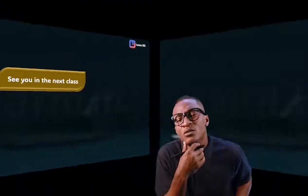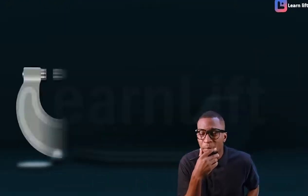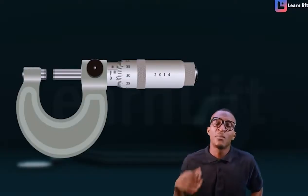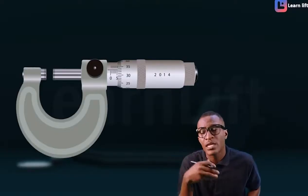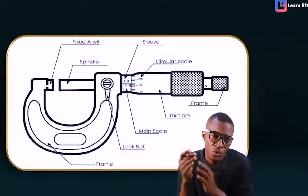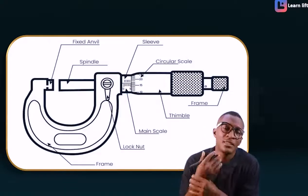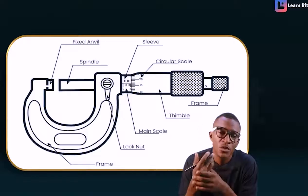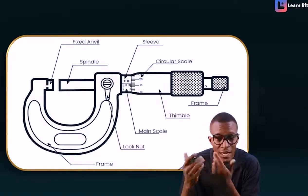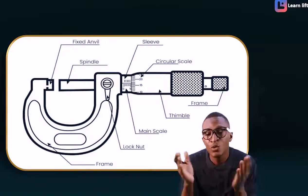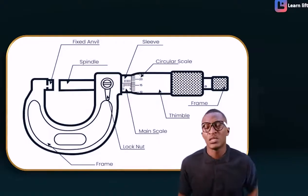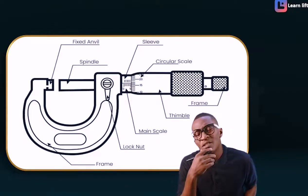Let's discuss the micrometer or screw gauge. The diagram you can see before you is a micrometer screw gauge. It has different parts: the anvil, the spindle, the sleeve, the circular scale, the frame, the thimble, the main scale, the log scale, and so on.